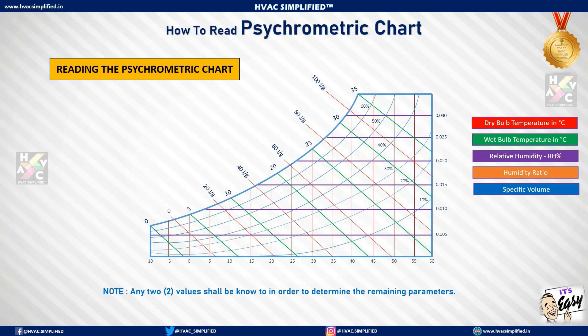Note that any two values must be known in order to determine the remaining parameters — the properties of the air at a given time. Usually, the main two values that are known are the dry bulb temperature and the wet bulb temperature, and sometimes the relative humidity. With these main parameters, the remaining values can be determined. In other videos, specific examples of reading the psychrometric chart will be explained. Thank you very much for watching.